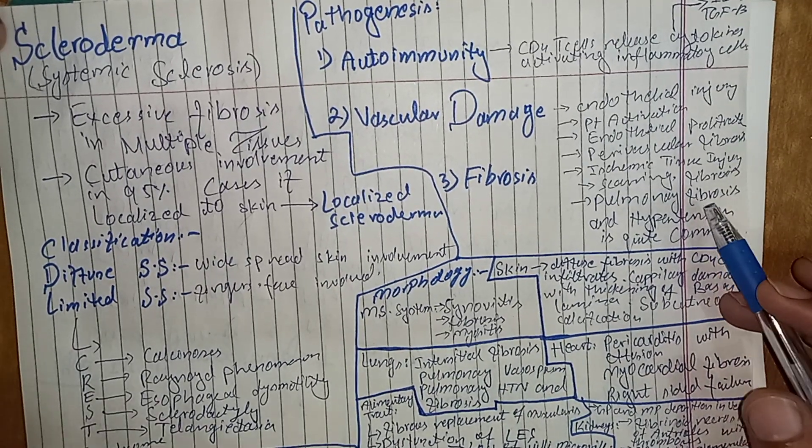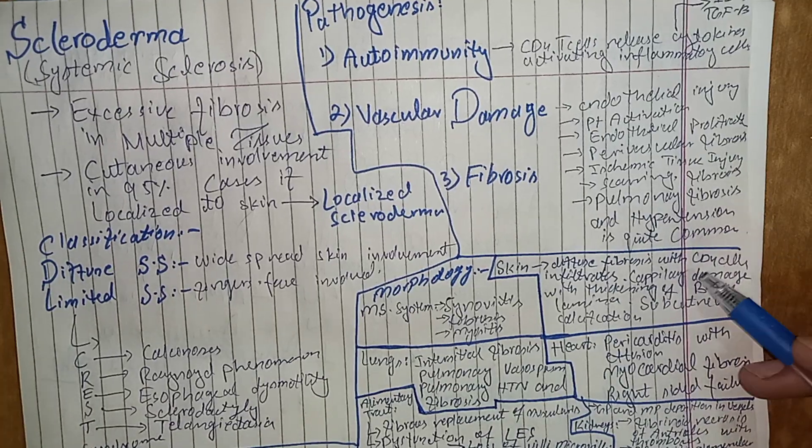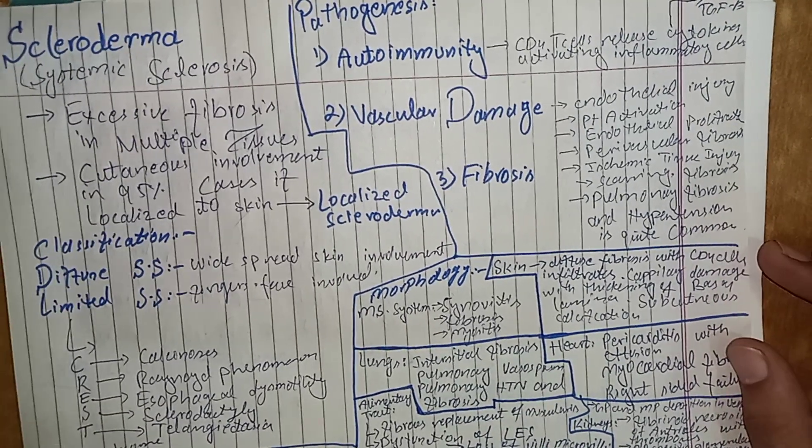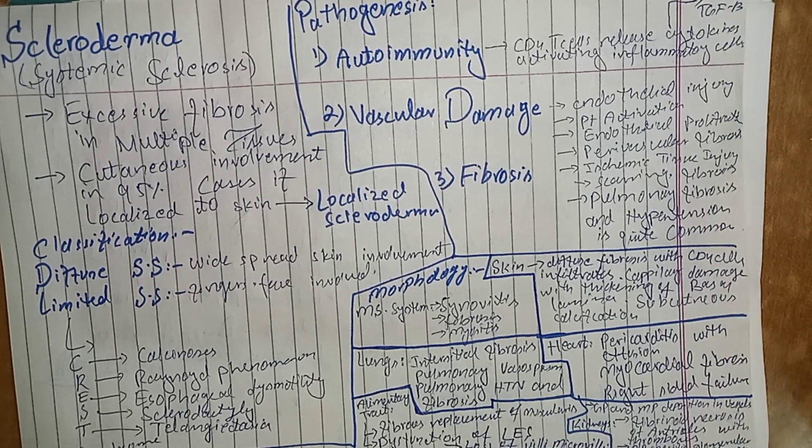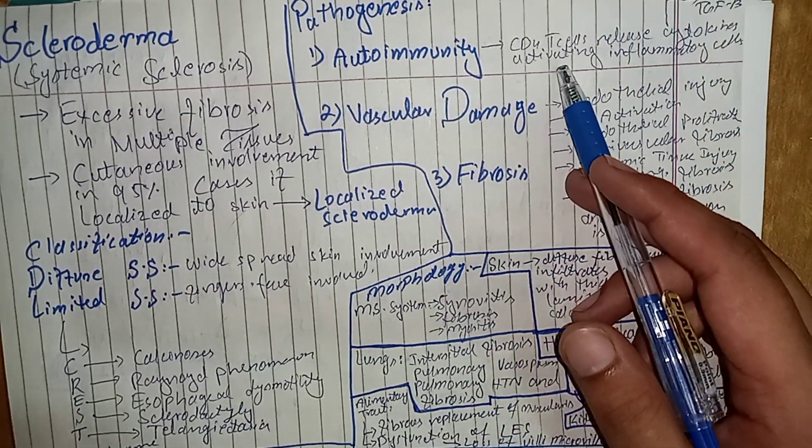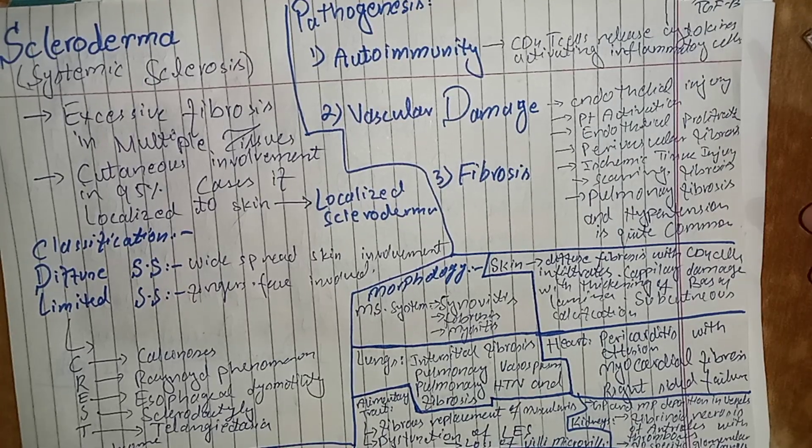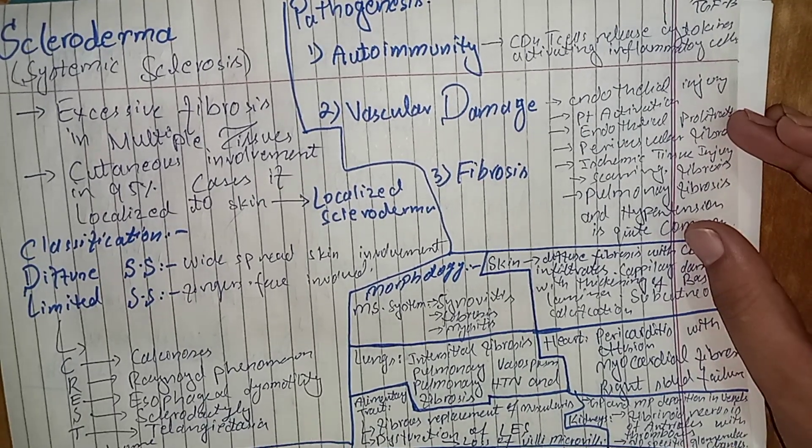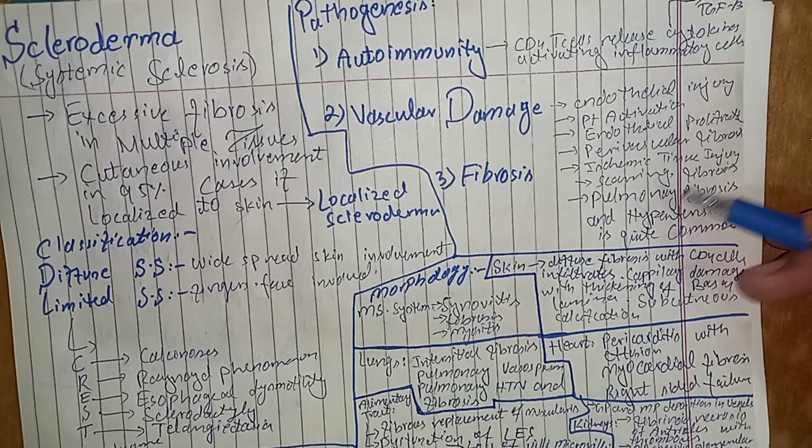Pulmonary fibrosis is quite prominent in this disease and it can lead to development of pulmonary hypertension which is quite common in this disease. When there is pulmonary hypertension, it puts heart under stress and can lead to the right-sided ventricular hypertrophy and right-sided heart failure. So CD4-T cells become active which lead to the production of cytokines which activate further inflammatory cells. Inflammatory cells can lead to the endothelial injury and endothelial activation which can lead to the vascular fibrosis and which can lead to the ischemic injury of other body tissues.